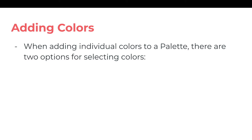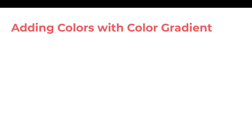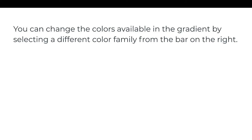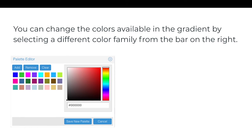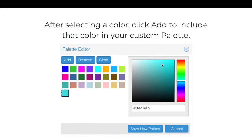When adding individual colors to a palette, there are two options for selecting colors: the color gradient and the hex code bar. The color gradient lets you choose any specific color from the gradient. You can change the colors available in the gradient by selecting a different color family from the bar to the right. After selecting a color, click Add to include that color in your custom palette.